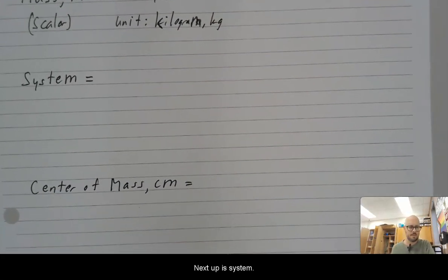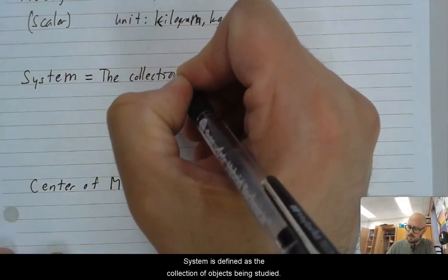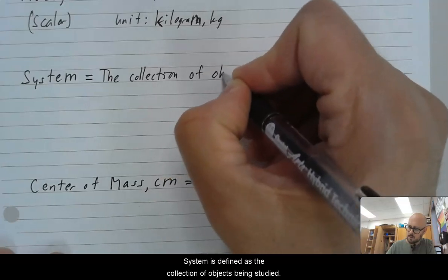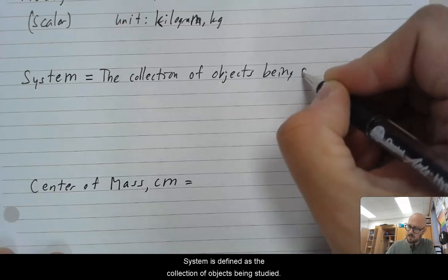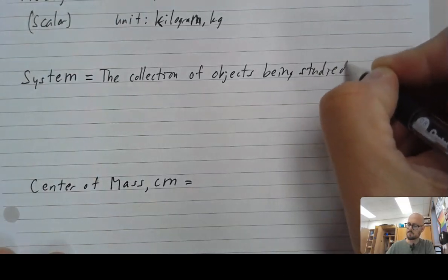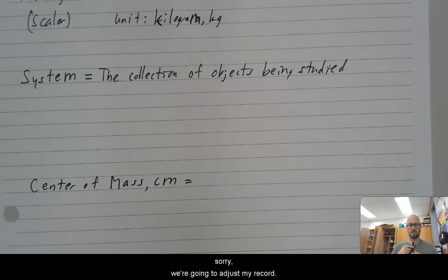Next up is system. System is defined as the collection of objects being studied. And so that's a very vague definition on purpose.